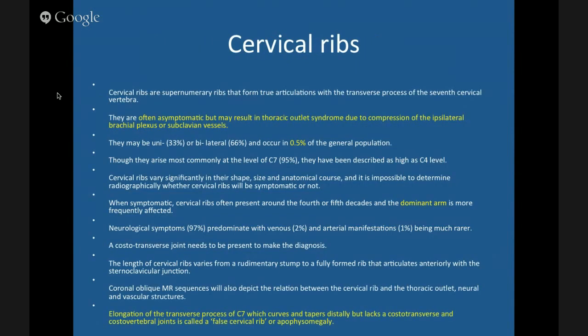Cervical ribs — it's actually quite common. Normally most people have 12 ribs, all linked to the thoracic vertebrae. But in about 0.5% of the patient population, you can have a cervical rib arising from C7 typically, though it can go up to C4. It's most commonly unilateral but can be bilateral — though more commonly you have a big one on one side and a tiny one on the other side.